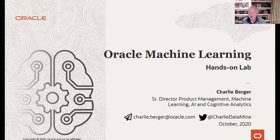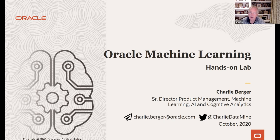Hi, I'm Charlie Berger. I'm the Senior Director of Product Management for Machine Learning at Oracle, and I've been here since 1999, since Oracle acquired the technical assets of a company called Thinking Machines. I worked with about 30 smart developers — they're all PhDs in machine learning, that kind of stuff.